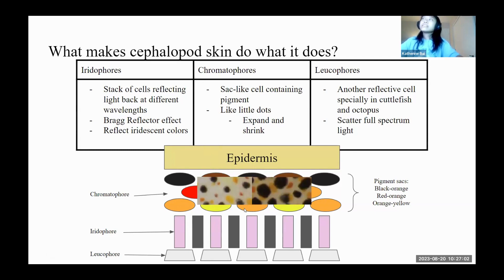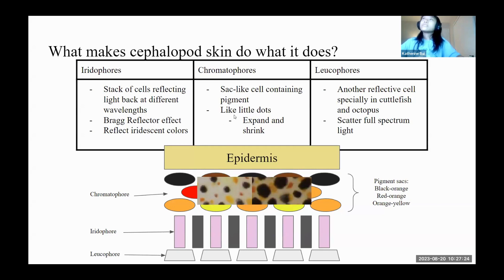The main difference between leukophores and iridophores is that iridophores reflect iridescent colors — like if you took a bubble and looked at it under sunlight, the colors you see really differ depending on the angle. In this case, when a cephalopod is looking at its surroundings compared to the POV of its predator or prey, it has to be able to adjust to what's around it.